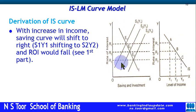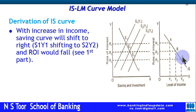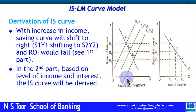Based on this, we can draw the IS curve. Corresponding to each income-saving level, we extend the points and draw the IS curve. In the second part, based on the level of income, the IS curve is derived.